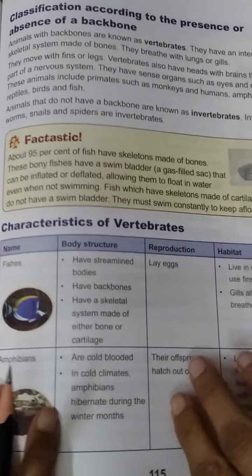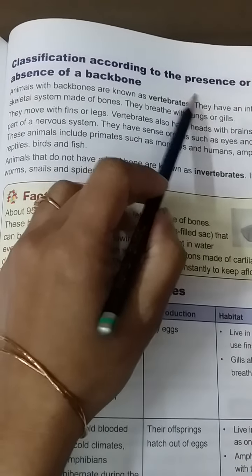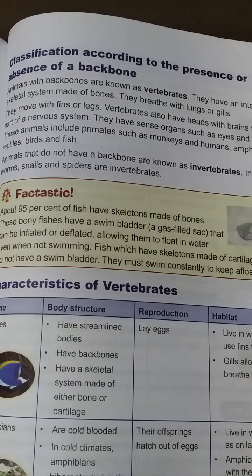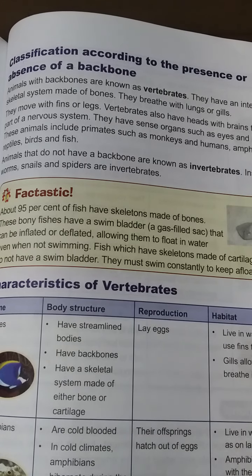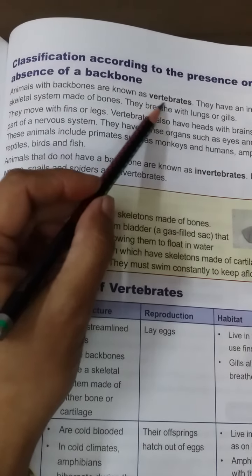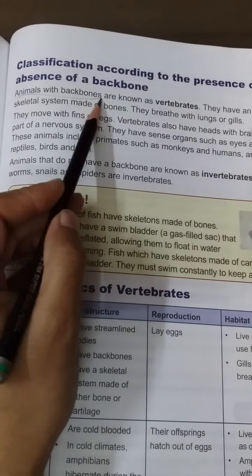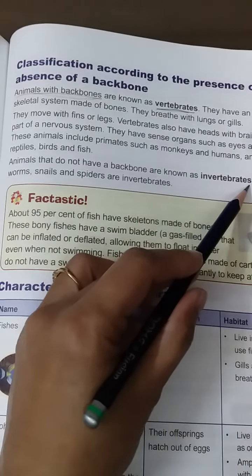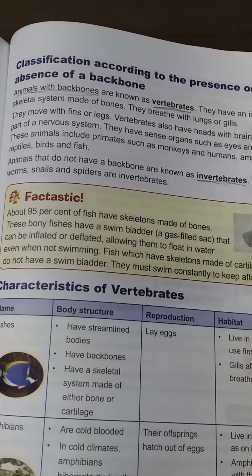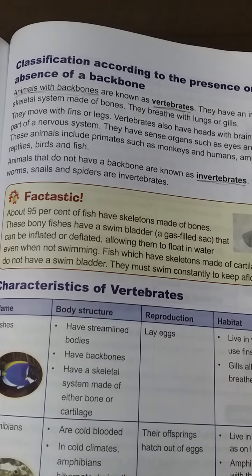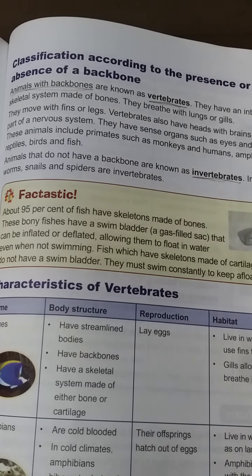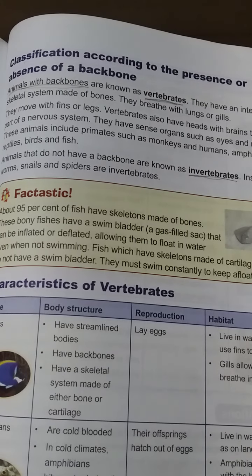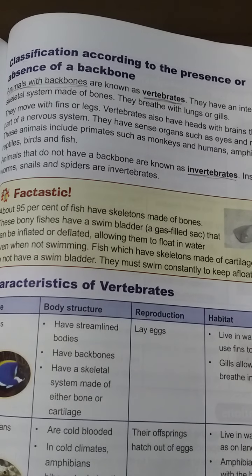Next is classification according to the presence or absence of a backbone. Animals with backbones are called vertebrates, and animals without backbones are called invertebrates. Human beings are vertebrates because we have backbones — you can feel your spinal cord if you touch your back.